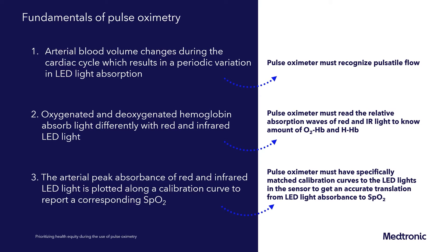Oxygenated and deoxygenated hemoglobin absorb light differently with red and infrared LED light. Pulse oximeters must read the relative absorption waves of both red and infrared light to know the amount of oxyhemoglobin and deoxyhemoglobin. Finally, the arterial peak absorbance of red and infrared light is plotted along a calibration curve to report a corresponding SpO2. Pulse oximeters must have specifically matched calibration curves to the LED lights in the sensor to get an accurate translation from LED light absorbance to SpO2.